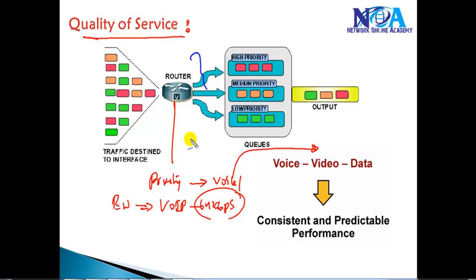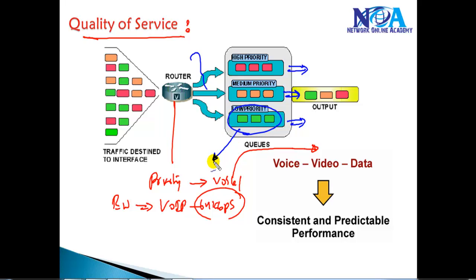With QoS, we can define traffic categories, reserve bandwidth for specific traffic, define priorities, and ensure that applications like FTP downloads do not utilize all the bandwidth. We can restrict them using policing options — and that is what we are going to cover in these sections.